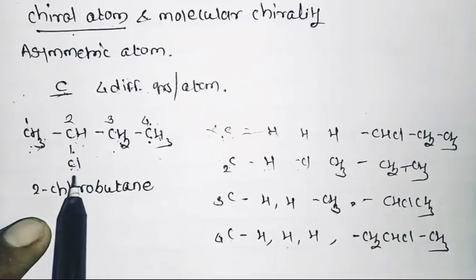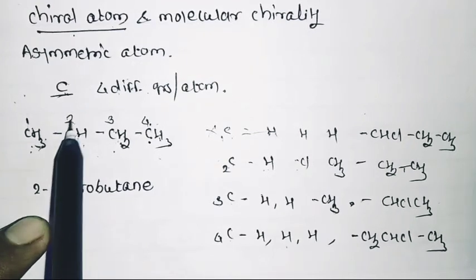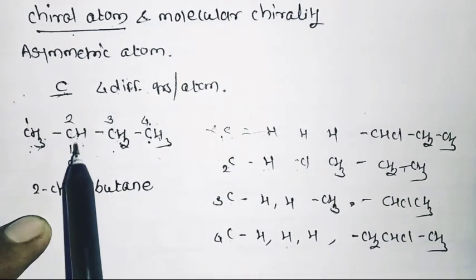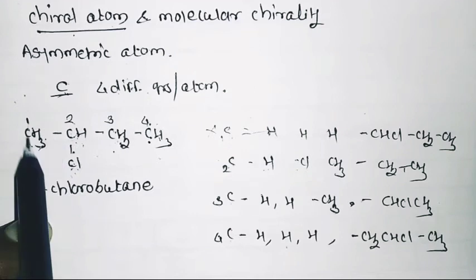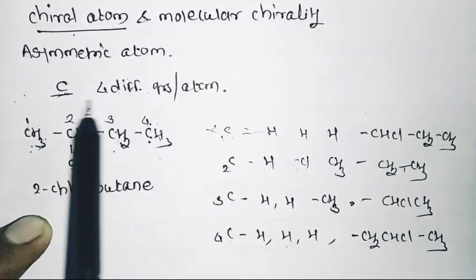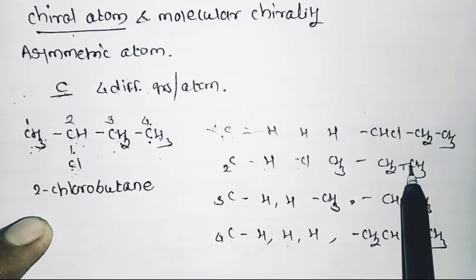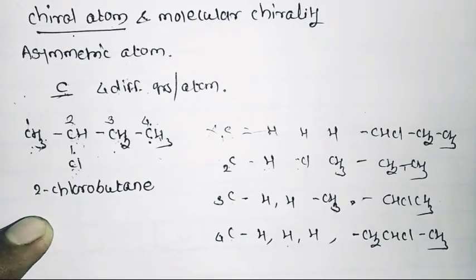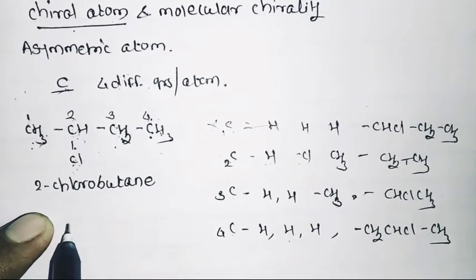In 2-chlorobutane, the second carbon is a chiral carbon atom, also called an asymmetrical carbon atom. It is bonded to 4 different groups: hydrogen, chlorine, CH3, and CH2CH3. It is called a chiral carbon or asymmetrical carbon atom. This chiral carbon is denoted by the symbol asterisk (*).